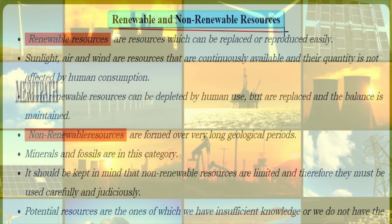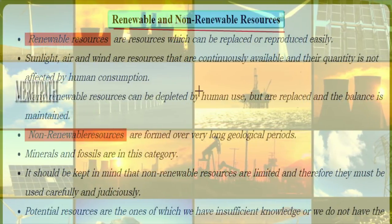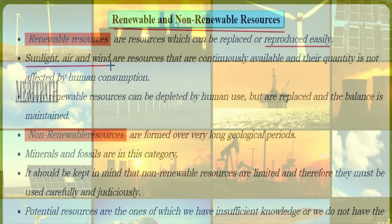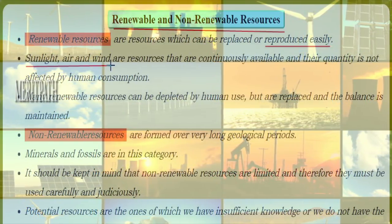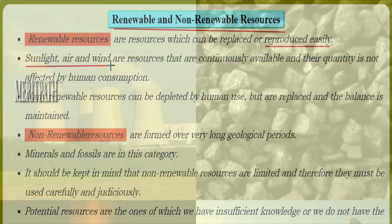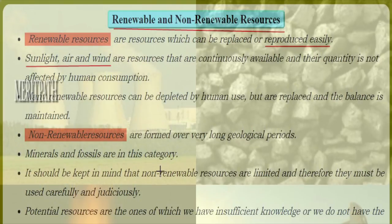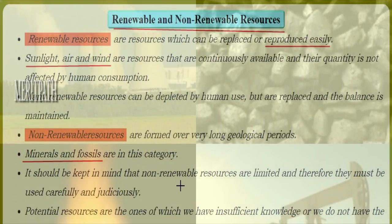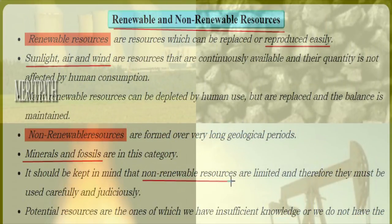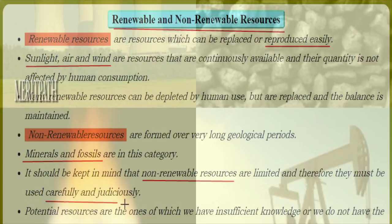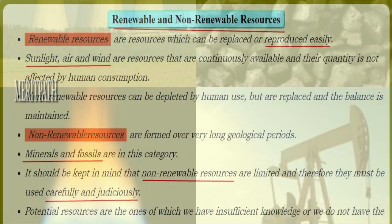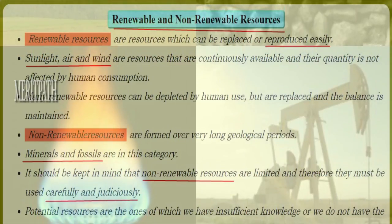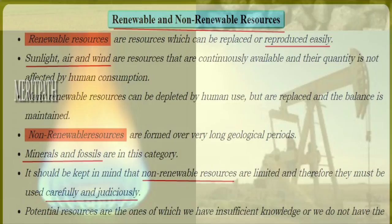Renewable resources are those which can be renewed or replenished again and again — examples include sunlight, air, wind, and water. Non-renewable resources cannot be replenished again and again; examples are minerals and fossils, which take many years to get renewed. We should use non-renewable resources very carefully and judicially so that we can save them for future generations.